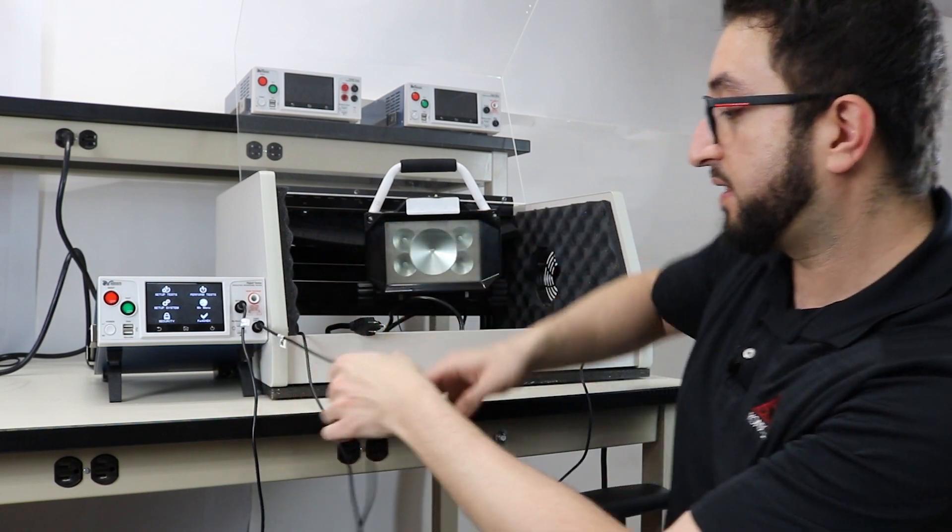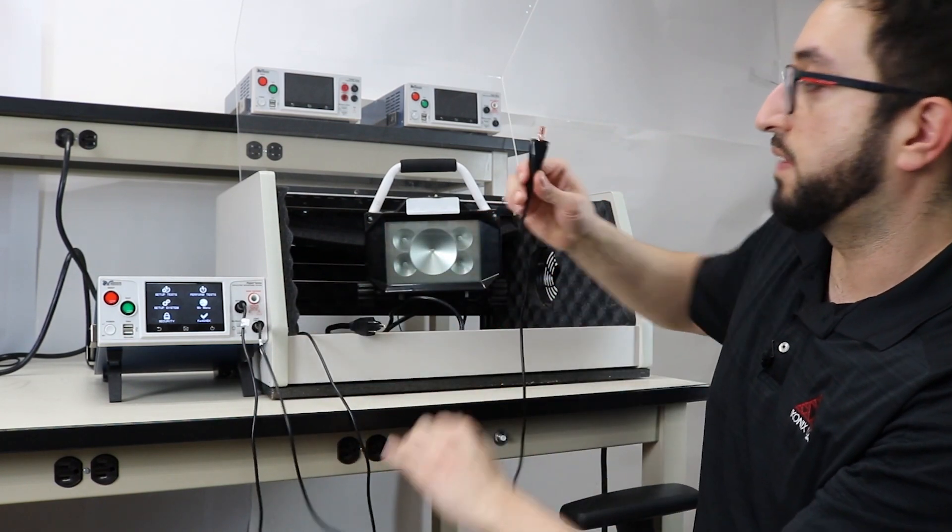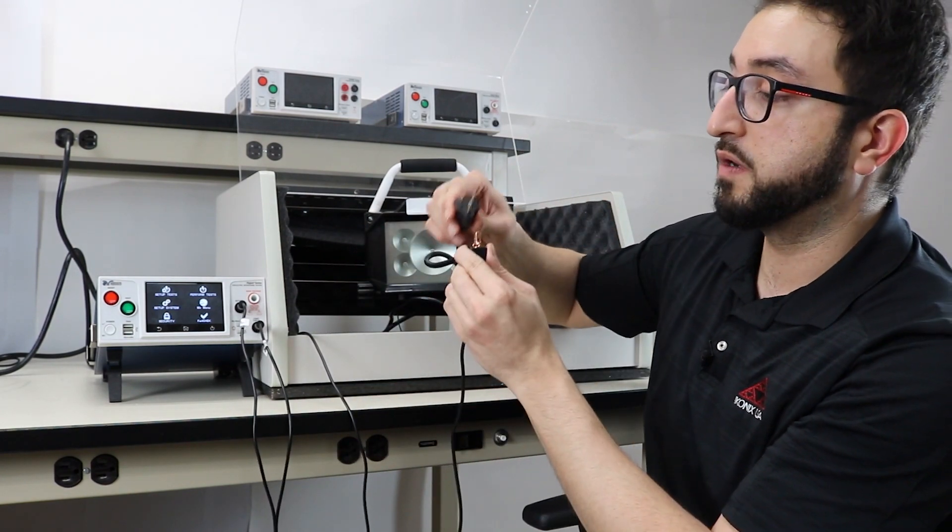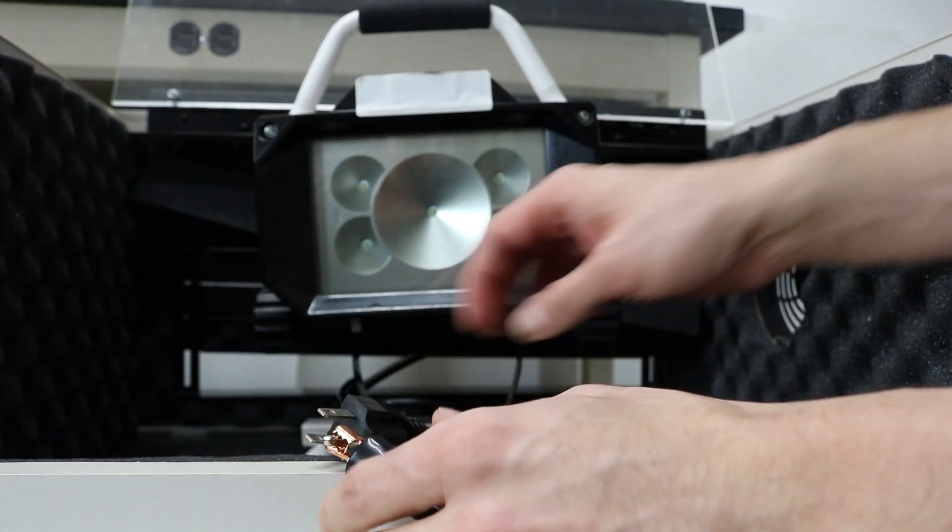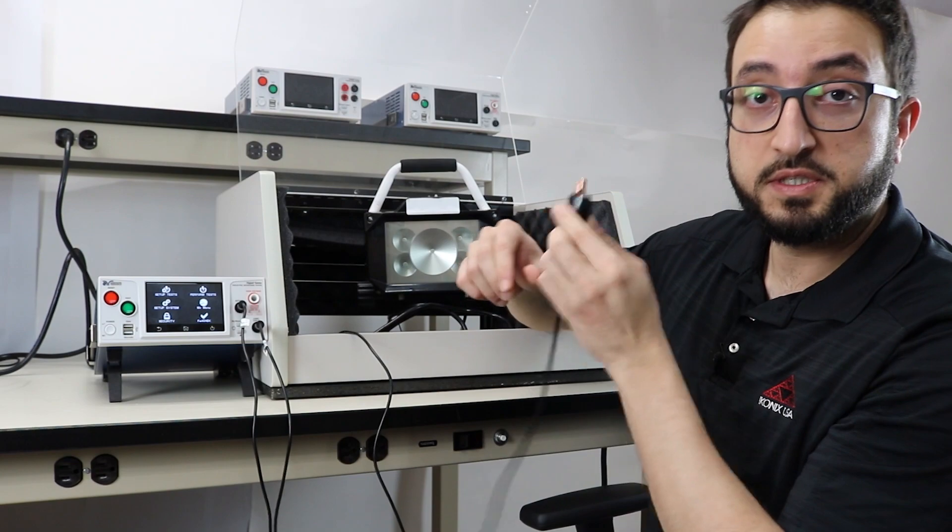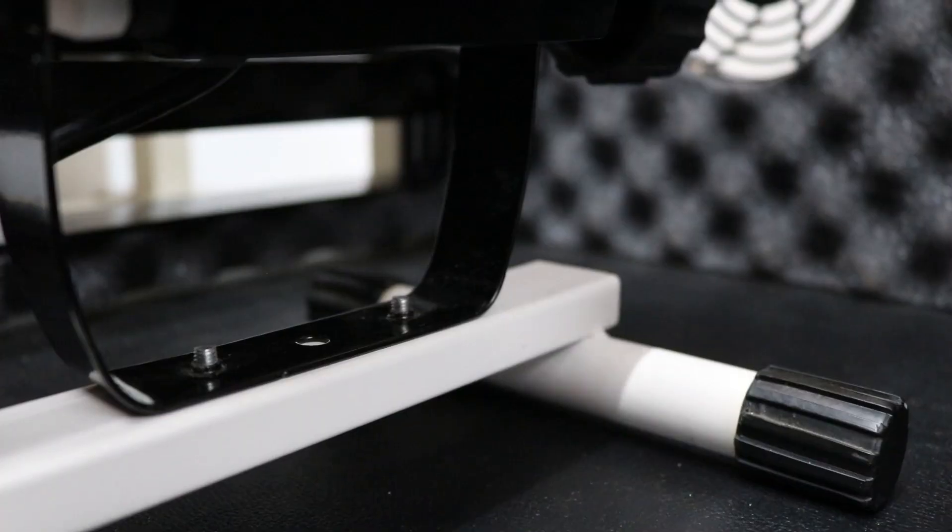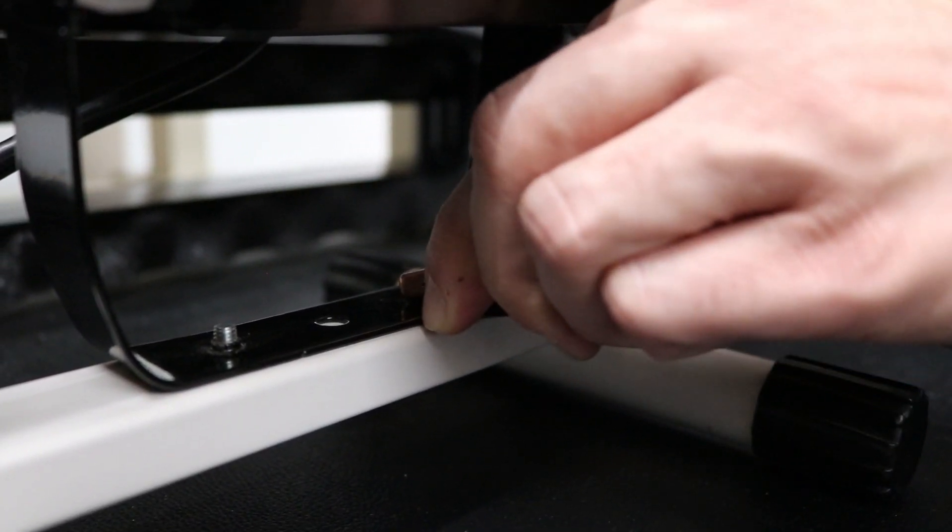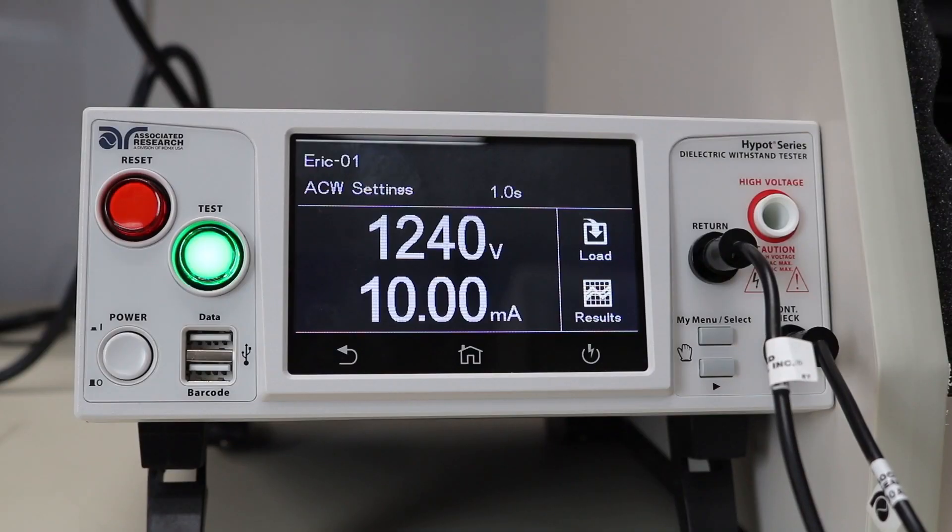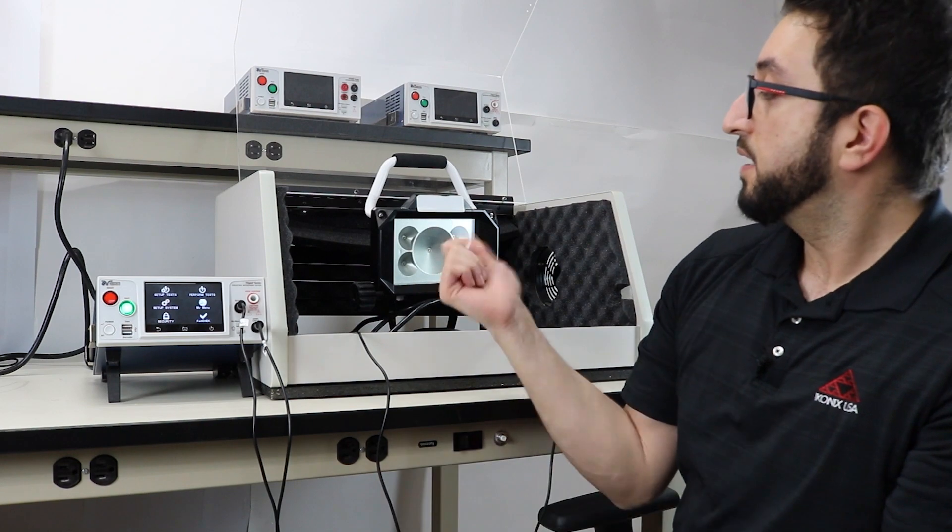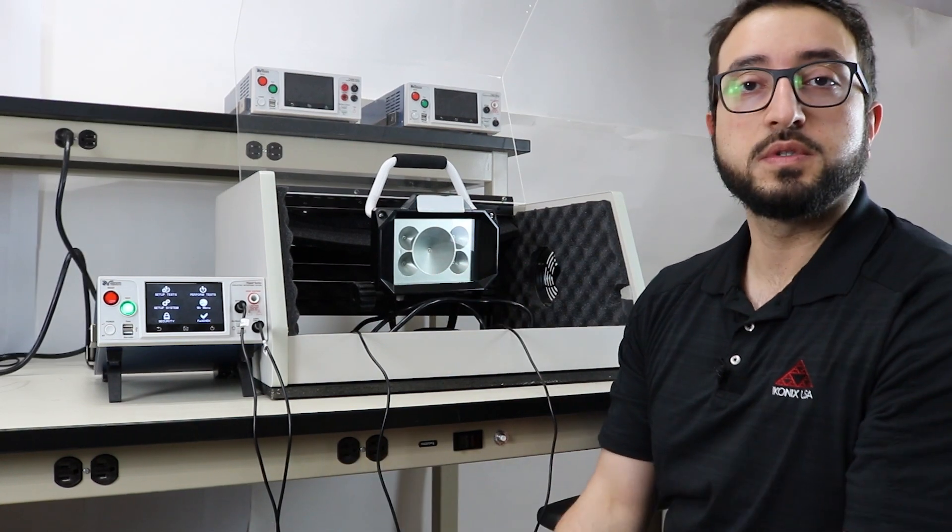We're going to take our continuity check lead which is right here and connect it to the ground pin on the line cord of the device, and then we're going to take our return test lead and connect it on a chassis point on the device under test. As you can see on the tester, the green light turns on which is indicating that this device has a continuous ground circuit.